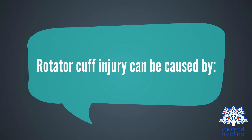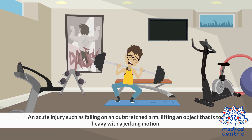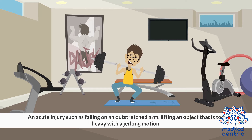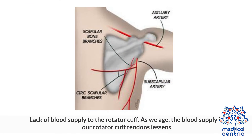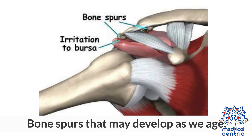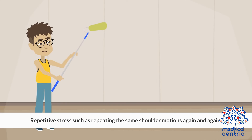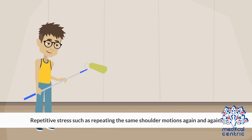Rotator cuff injury can be caused by an acute injury, such as falling on an outstretched arm, or lifting an object that is too heavy with a jerking motion. Other causes include lack of blood supply to the rotator cuff — as we age, the blood supply in our rotator cuff tendons lessens — bone spurs that may develop as we age, and repetitive stress, such as repeating the same shoulder motions again and again.